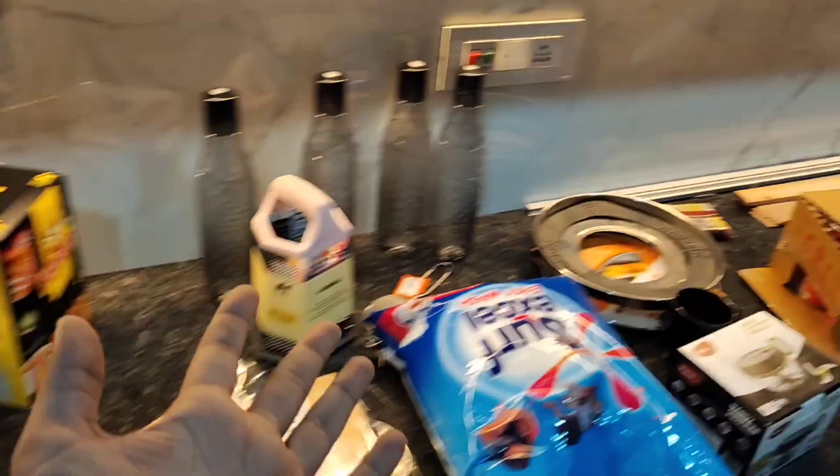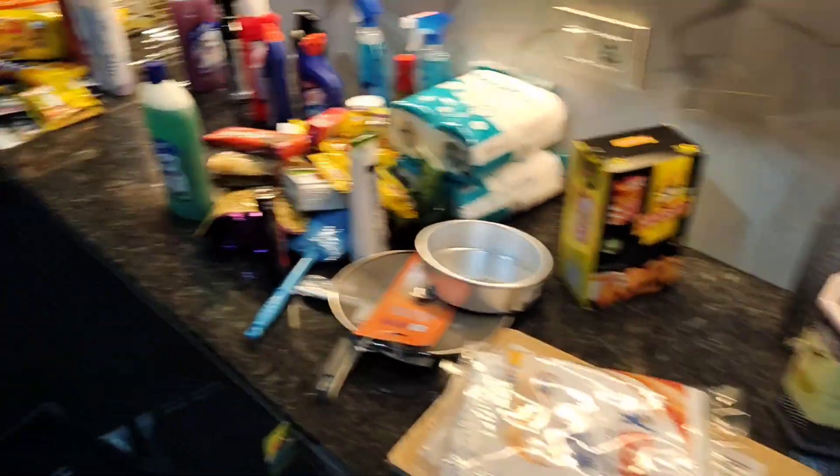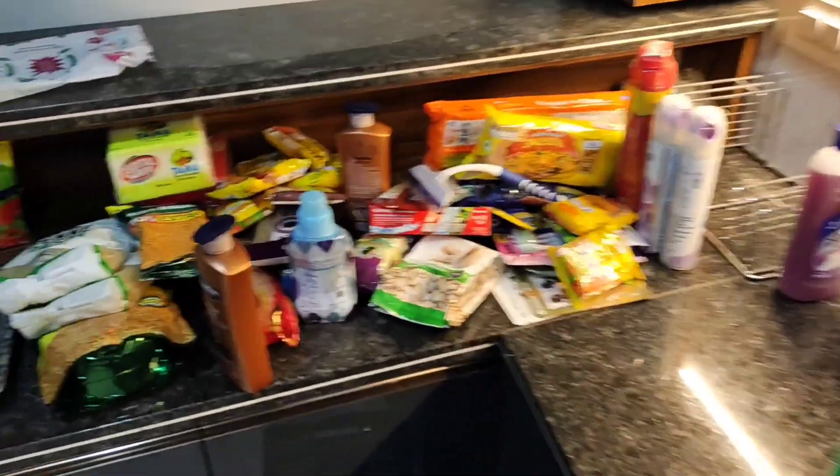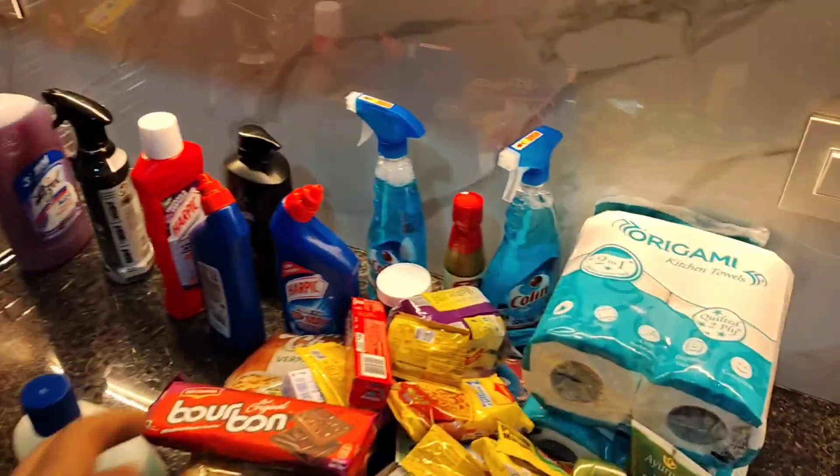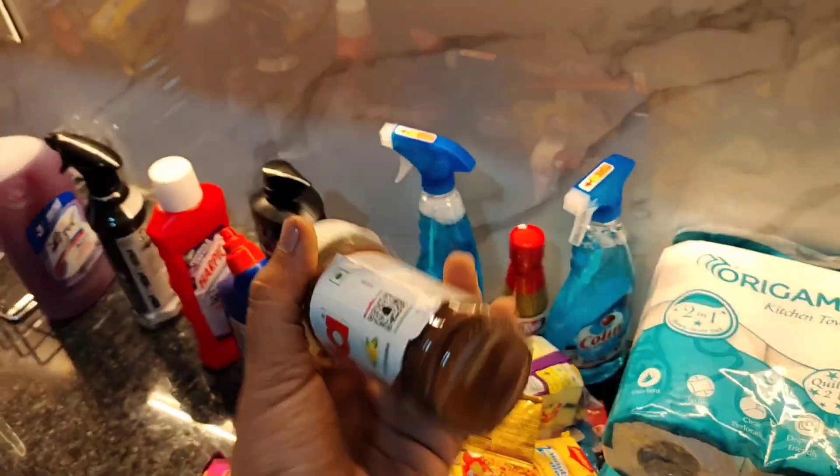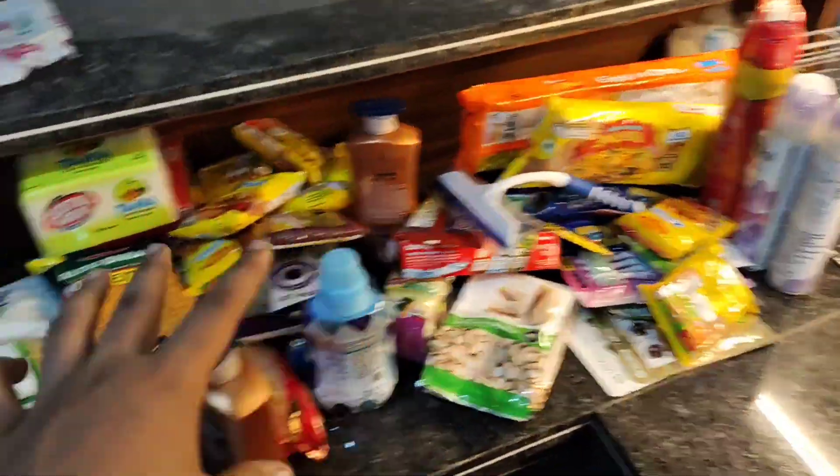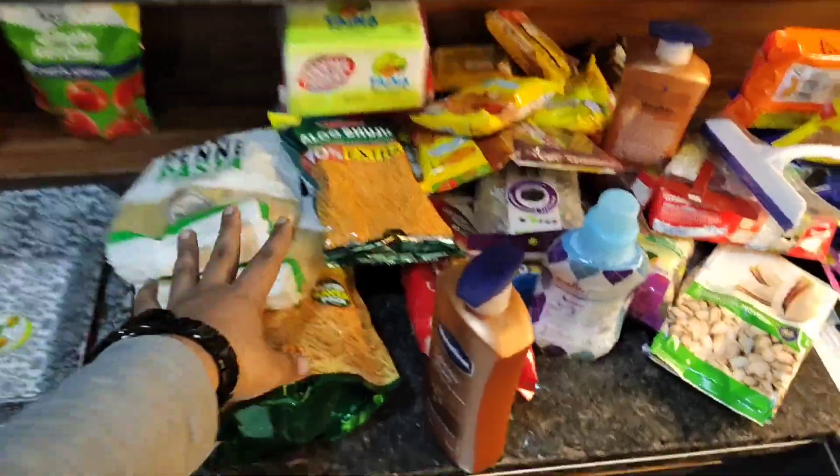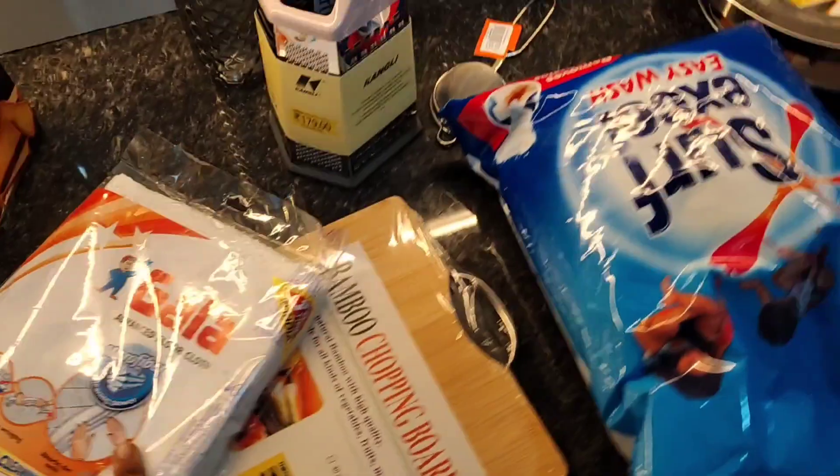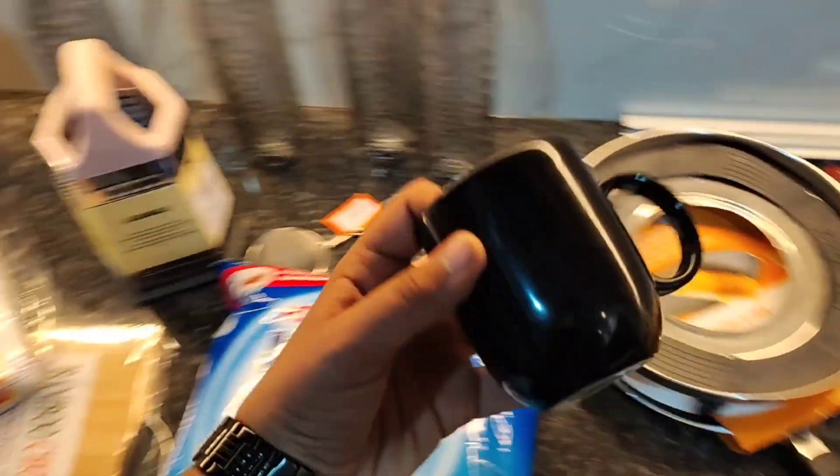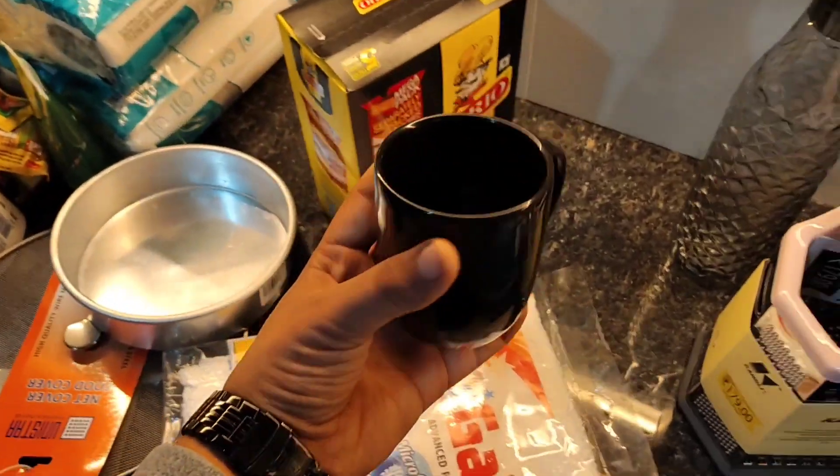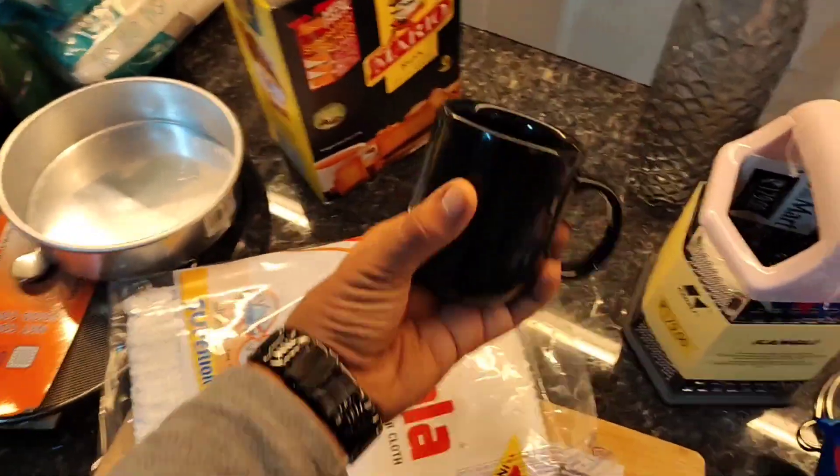So these are all the groceries. Everything was finished. So here are some Coke, detergent powders, Maggi, like everything, nothing is left. So Nutella, Maggi and paper rolls, like so many things, pasta and ketchup and all. So yeah, if I start explaining everything it will take a lot of time. So this is my new cup that I bought and yeah.